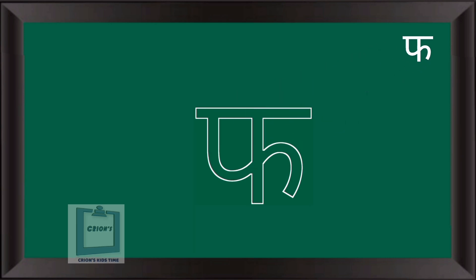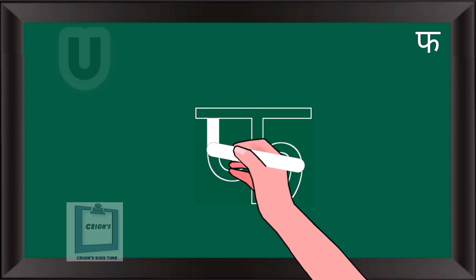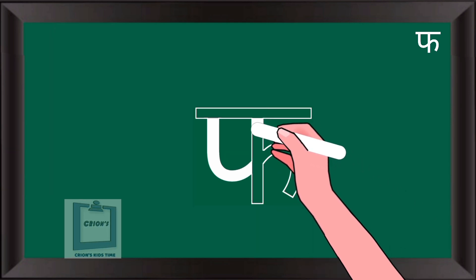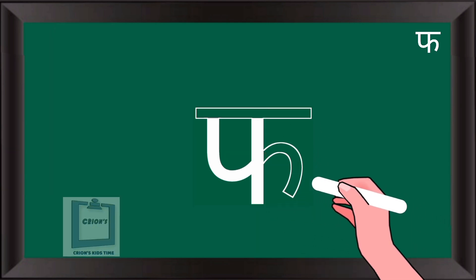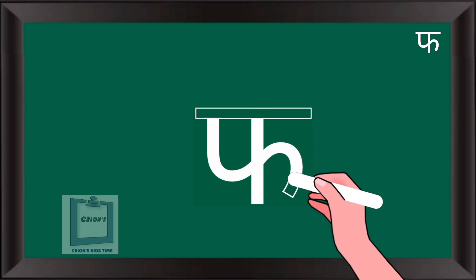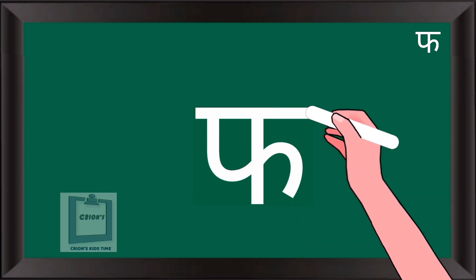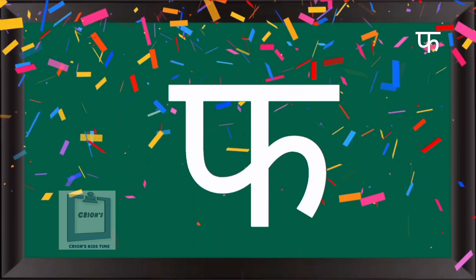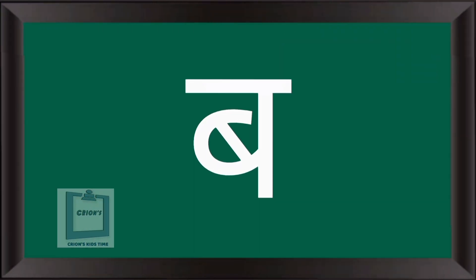Pah. To write Pah, it is same like Pah. Begin with half alphabet U, then one standing line, then one curve like this, then finally slipping line. Pah.